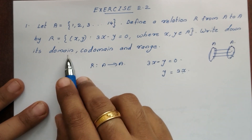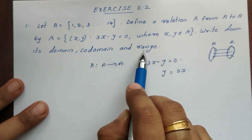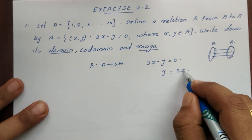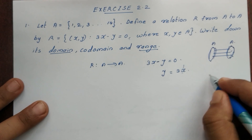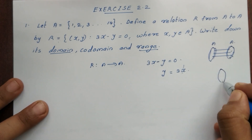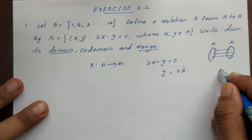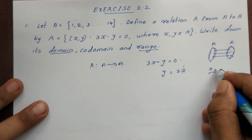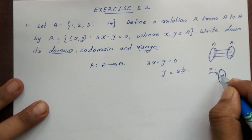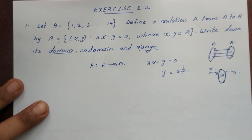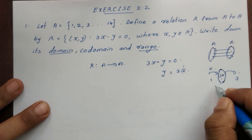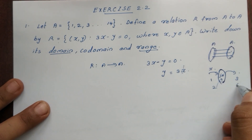Using y = 3x: if x = 1, then y = 3; if x = 2, then y = 6; giving us output values for each input.